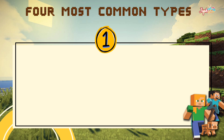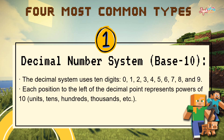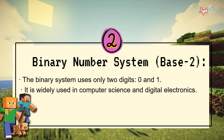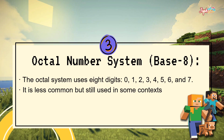We have 4 most common types. First, the decimal number system. The decimal system uses 10 digits, 0 to 9. Each position to the left of the decimal point represents powers of 10. Second, the binary number system. The binary system uses only 2 digits, 0 and 1. It is widely used in computer science and digital electronics. Third, the octal number system. The octal system uses 8 digits, from 0 to 7. It is less common but still used in some contexts.